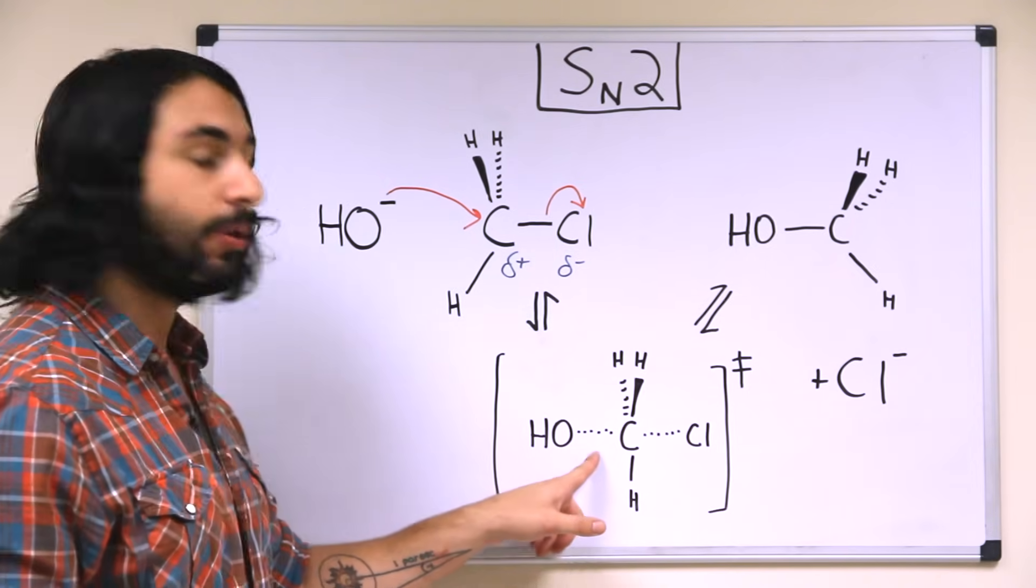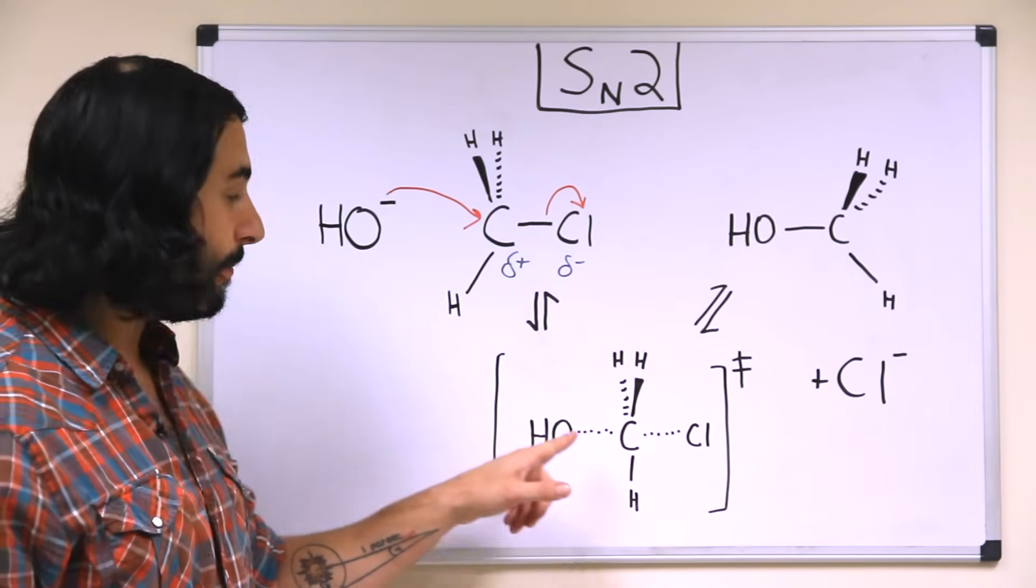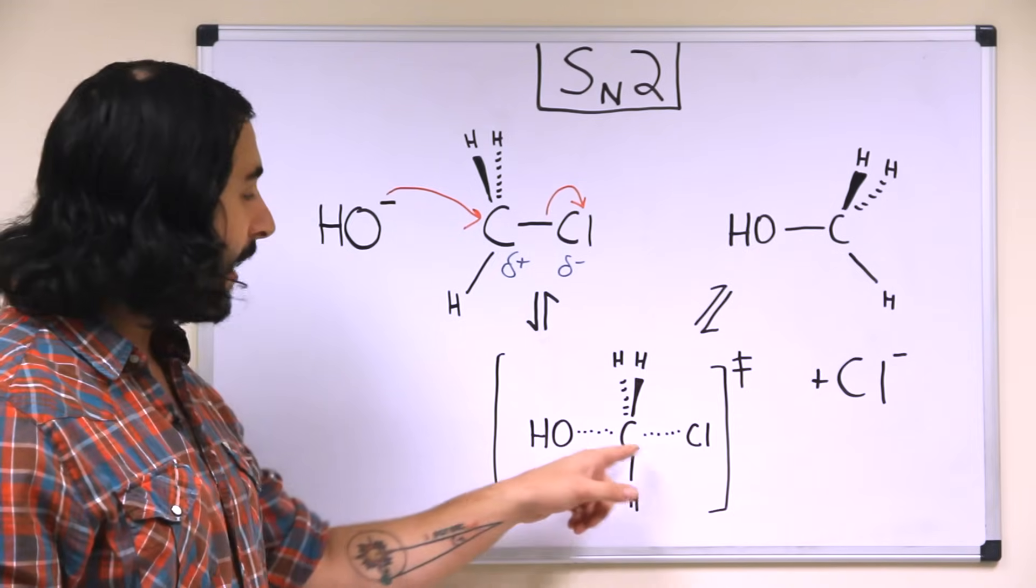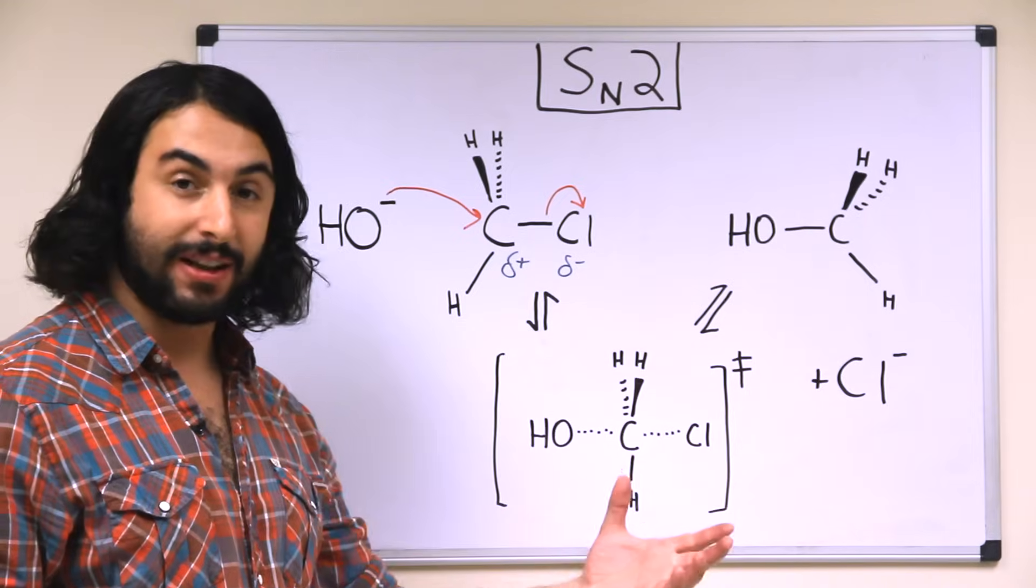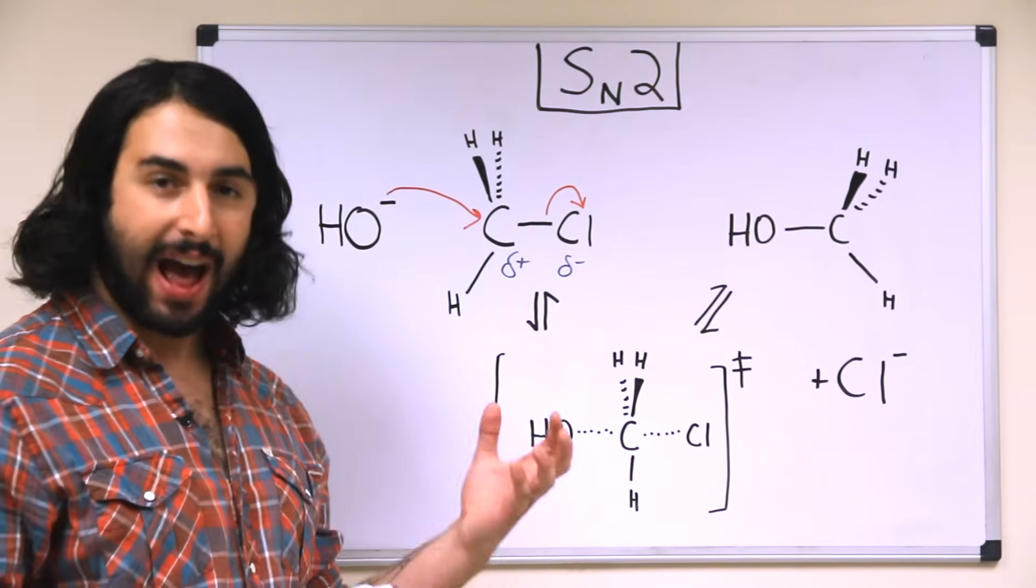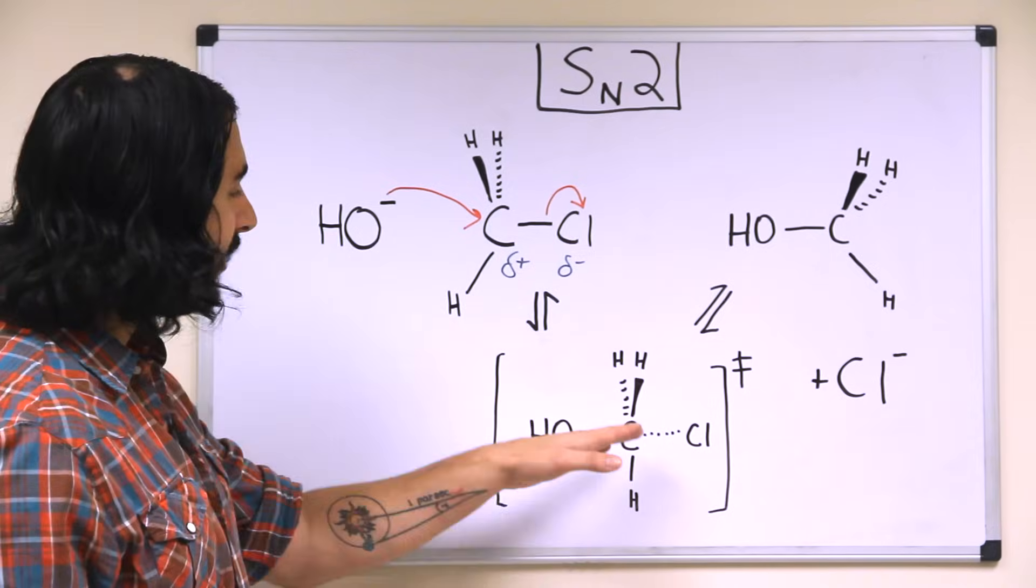So basically we can see a partial covalent bond beginning to form between the oxygen and the carbon and a partial bond here between the carbon and the chlorine as the chlorine begins to leave. So you can think of it almost as like a half bond each in the transition state.